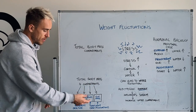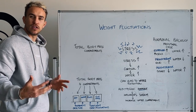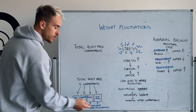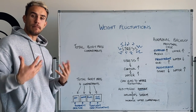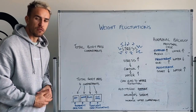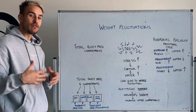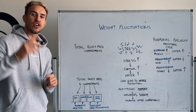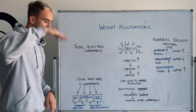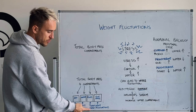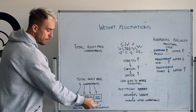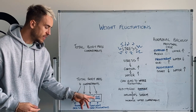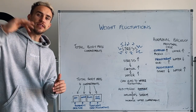Then we have two other compartments. One is the fluid compartment — water retention, blood flow, and hormonal things. Then there's the gut mass compartment: everything else inside your body, including bowel movements, food, and digestion. These two are changing constantly each day, going up and down. These are the transient compartments, while fat and muscle are the more permanent compartments. These transient ones are why we go up and down on the scale.